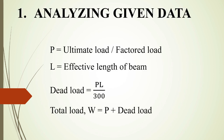Analyzing the given data: we will determine how to find the effective load. The dead load is PL divided by 300, where P is the ultimate load and L is the effective span. This gives us the dead load in kN/m or N/m. We then calculate the total load W, which is equal to P plus the dead load.